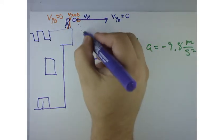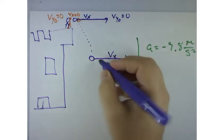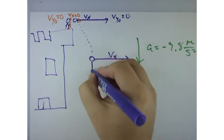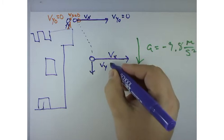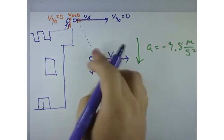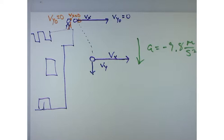But because of the acceleration, now I have a velocity in the Y direction. Now, I don't know what number it is, but the length of that arrow, or that vector, represents the magnitude of that.